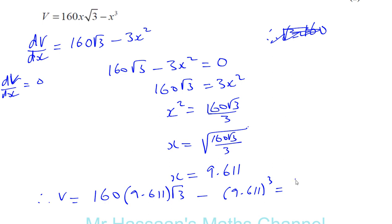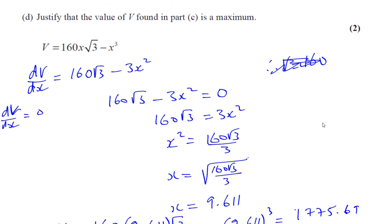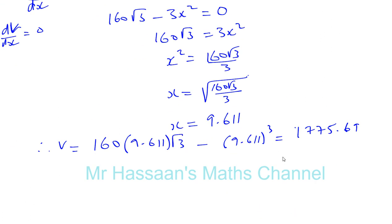That's using the answer in the calculator in its exact form, and that will give us the volume required, which is 1775.69. So 1775.69. So the question told us to write it to the nearest integer. So we're going to have 1,776 cubic centimeters.